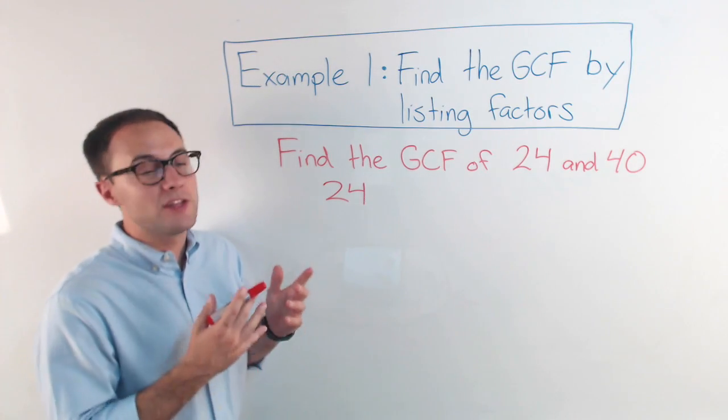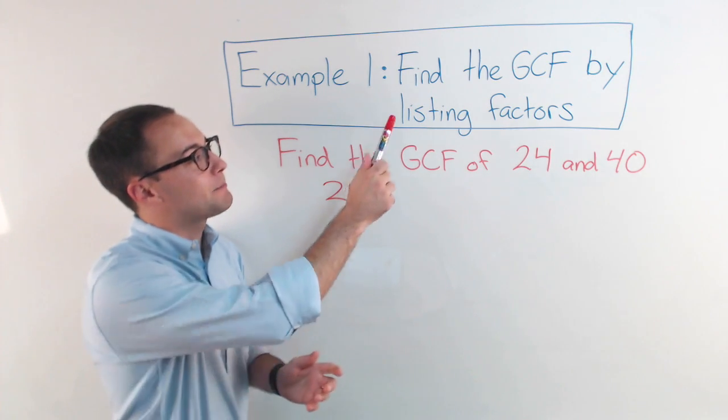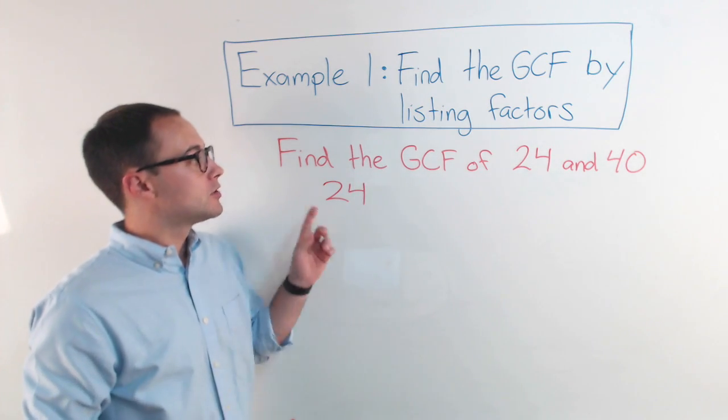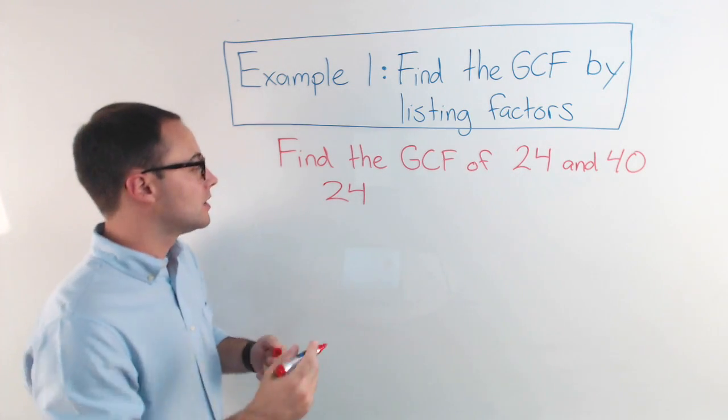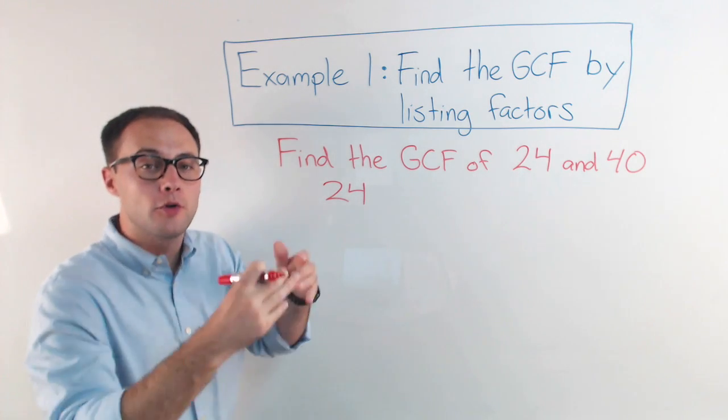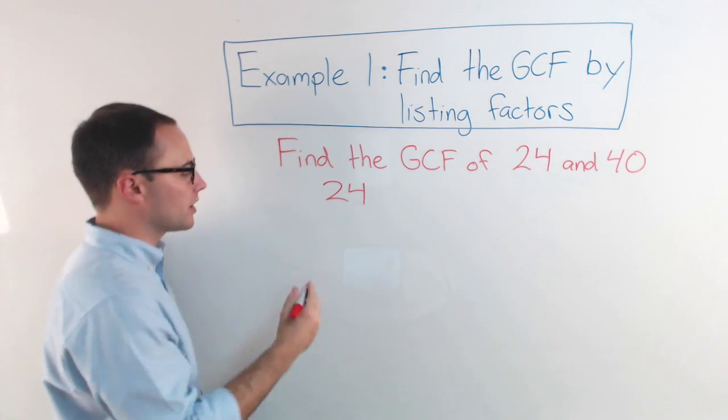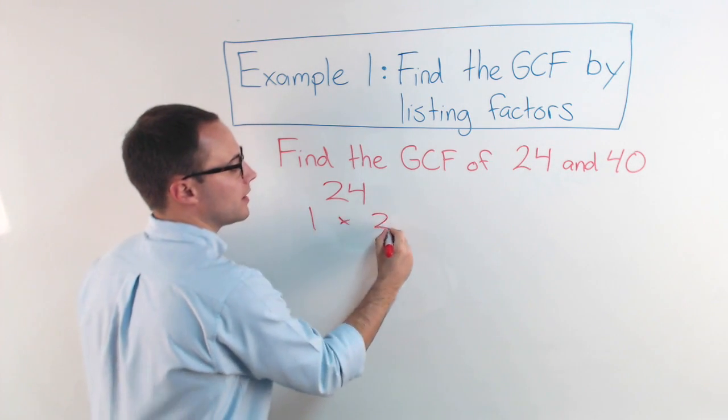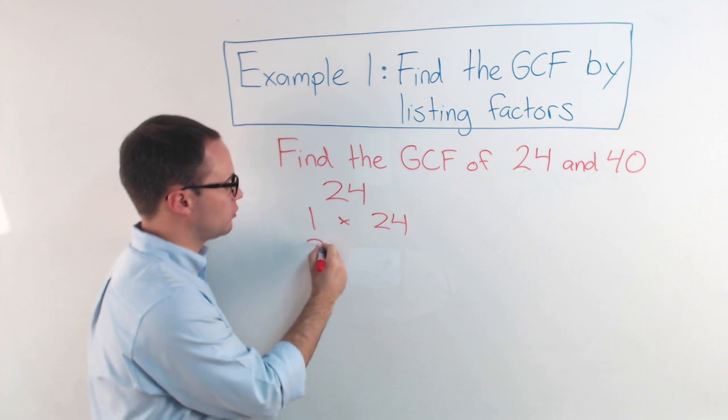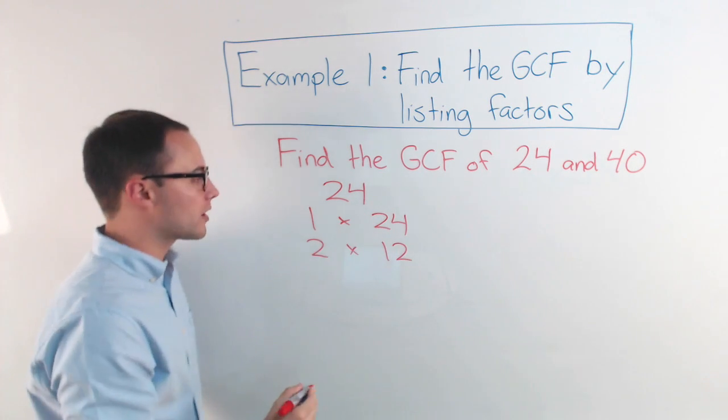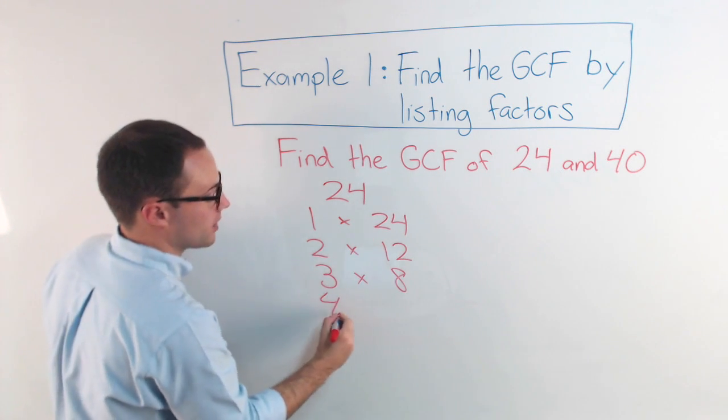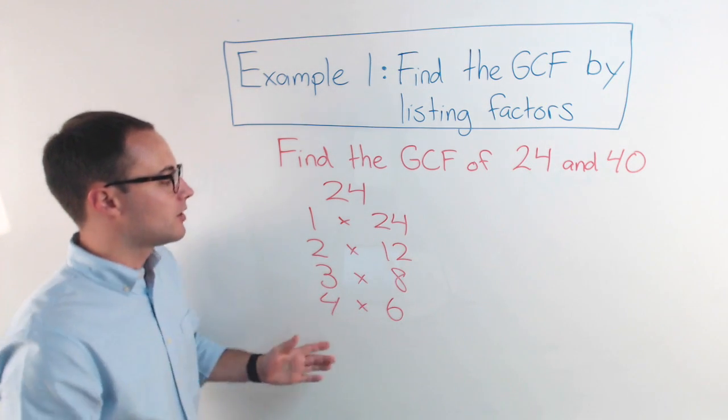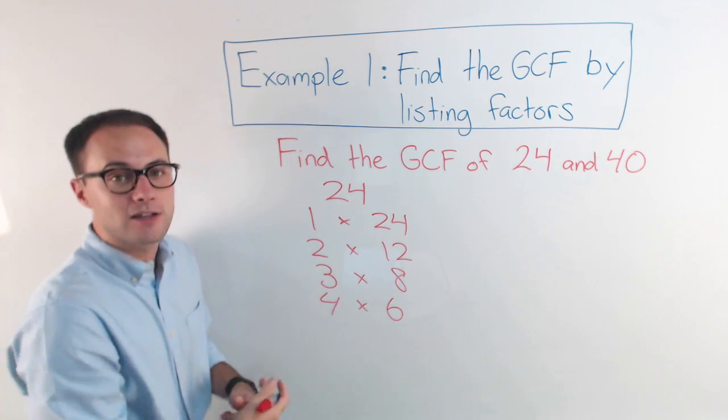Let's try an example. There's a couple ways we can find the GCF. The first one we're going to go over is by listing factors. So I'm going to find the GCF of 24 and 40. First, I'm going to list the factors of each of those numbers. So 24, I'm going to go through my factor pairs. So first, I always start with 1 and 24. It's an even number, so I know 2 works. 2 times 12 is 24. I know 3 works. 3 times 8 is 24. Also 4 times 6. No 5, and then I'm back to 6. So those are my factors for 24.